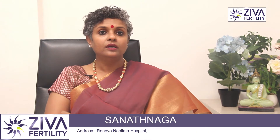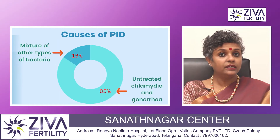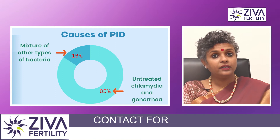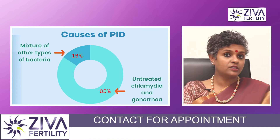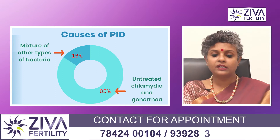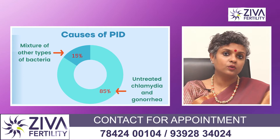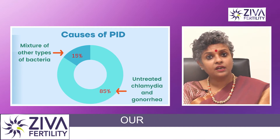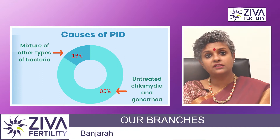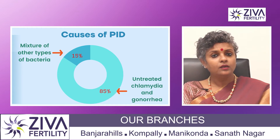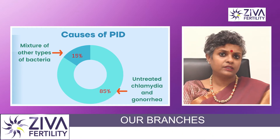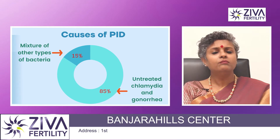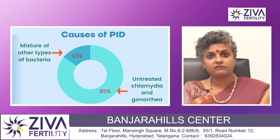Why does PID happen? About 85% of PID cases are caused by untreated sexually transmitted diseases such as chlamydia and gonorrhea. The remaining 15% of PID cases can also be caused by a mixture of bacterial infections.